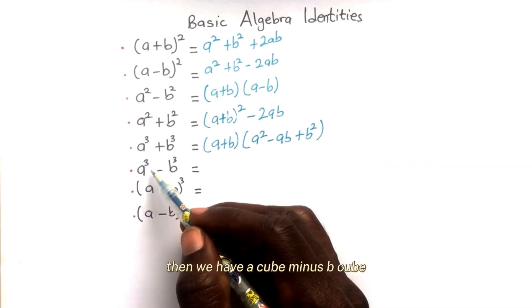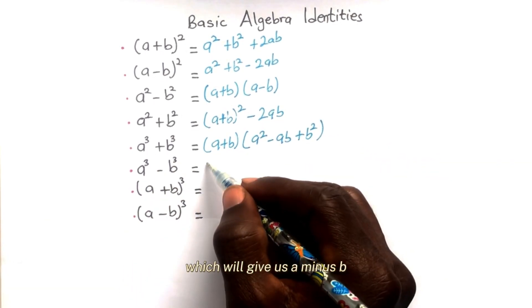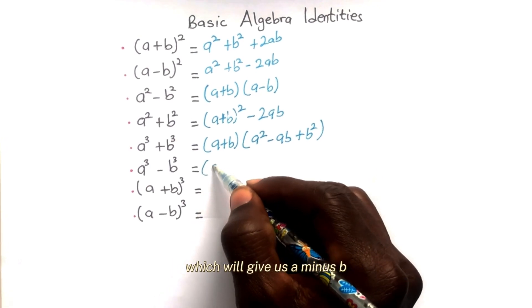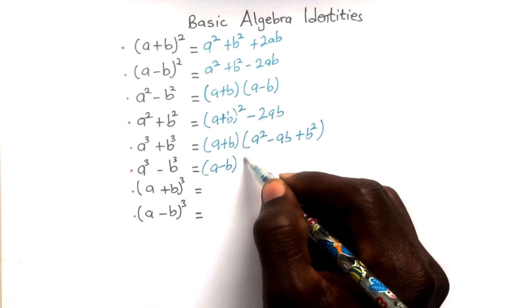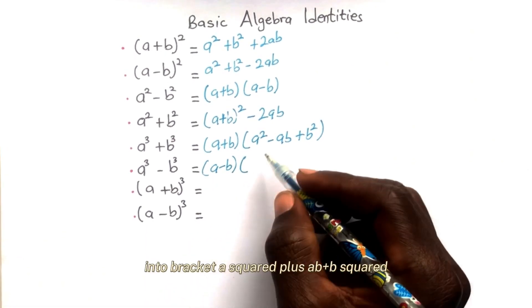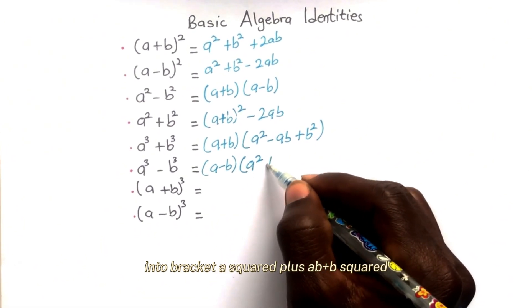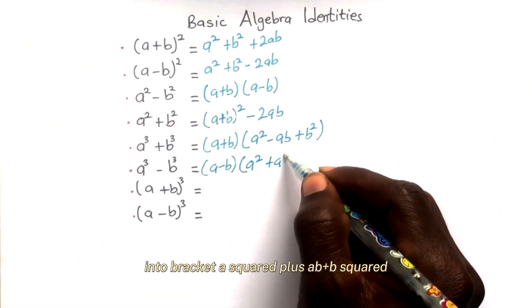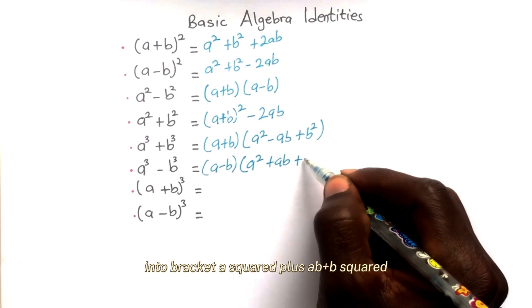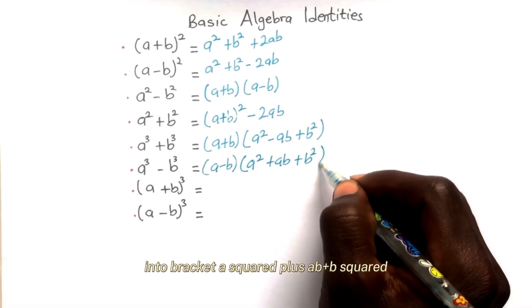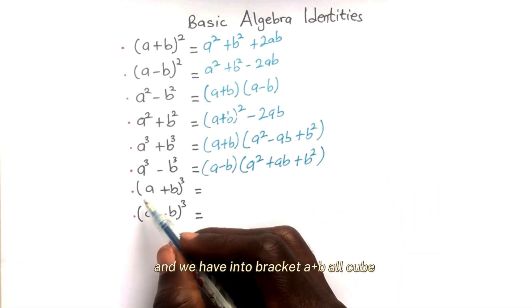a cubed minus b cubed will give us (a minus b) into (a squared plus ab plus b squared).